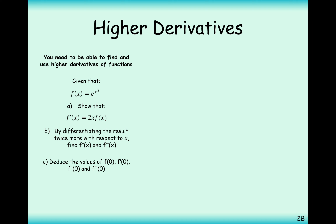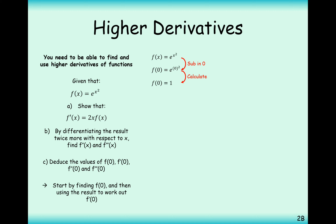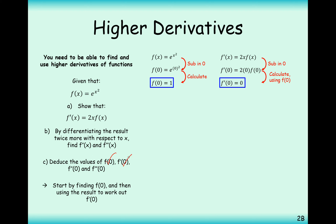Part c asks us to deduce f(0), f'(0), f''(0), and f'''(0) — building blocks for the Maclaurin series in the next video. For f(0): substitute 0 into e^(x²), giving e^0 = 1. For f'(0): substitute 0 into 2x·f(x), giving 2·0·f(0) = 0, so f'(0) = 0.